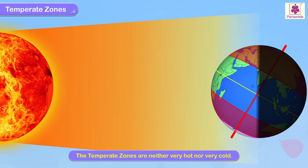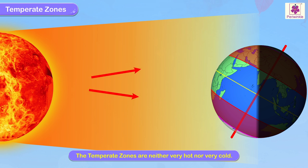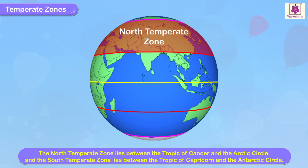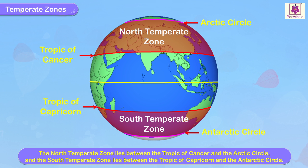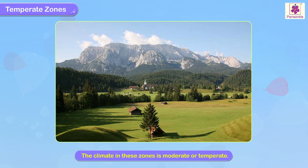Two: Temperate Zones. The temperate zones receive slanting rays of the Sun and are therefore neither very hot nor very cold. The north temperate zone lies between the Tropic of Cancer and the Arctic Circle, and the south temperate zone lies between the Tropic of Capricorn and the Antarctic Circle. The climate in these zones is moderate or temperate.